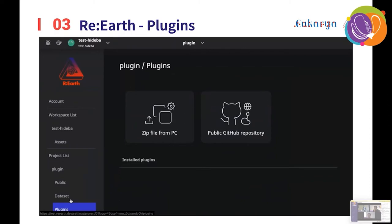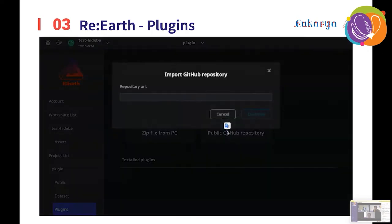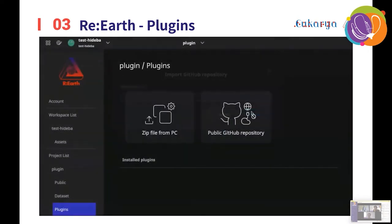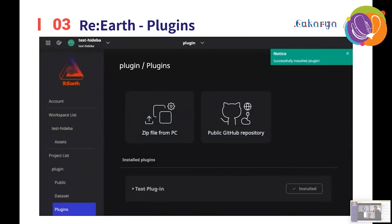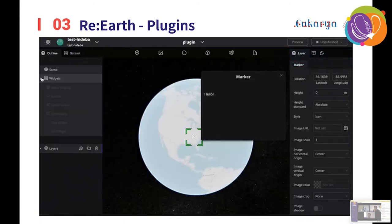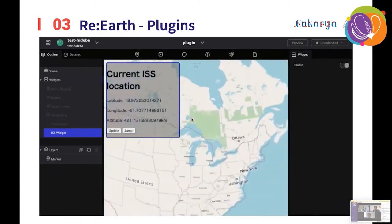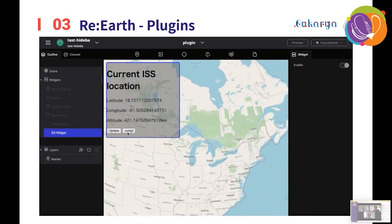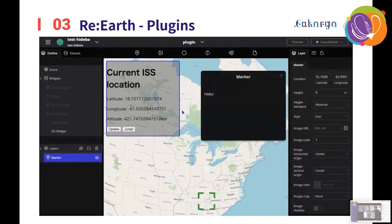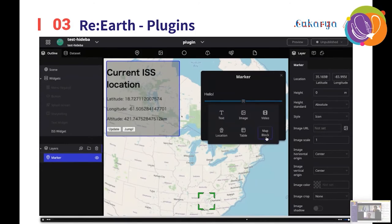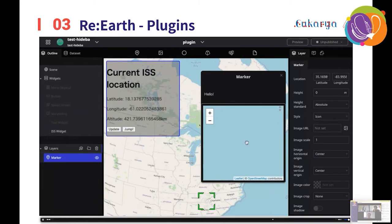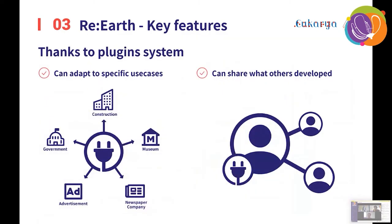The fifth feature is the plugin feature. Any developer is able to extend functionality by developing their own plugins. In fact, most of the current features have been developed as official plugins. We can develop a widget displayed on the screen and a content block on InfoBox as a plugin. We also plan to develop a plugin feature that will allow you to incorporate layers on the Earth and your own arithmetic operations. The plugin feature allows us to support a wide variety of use cases, and plugins developed by external developers can be used, thereby reducing duplicated development.